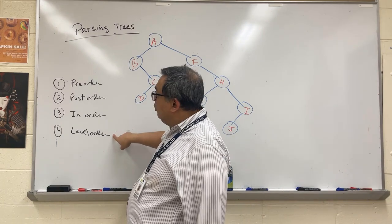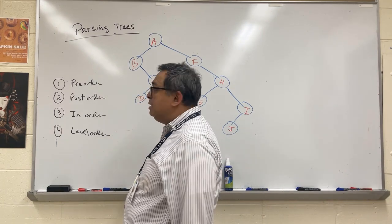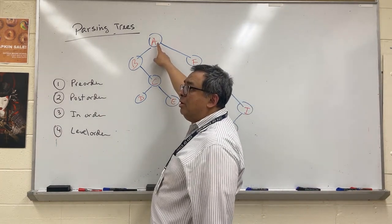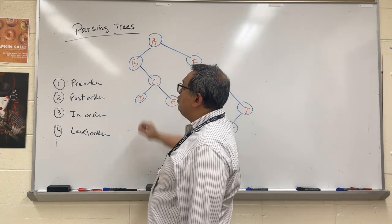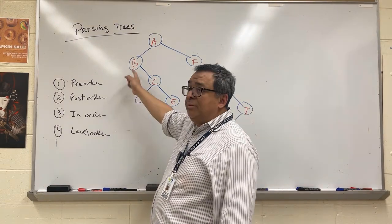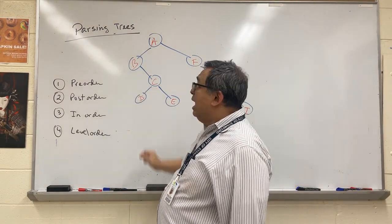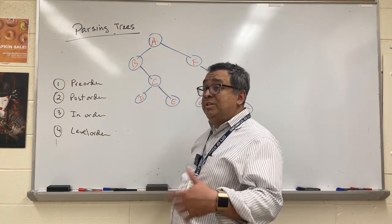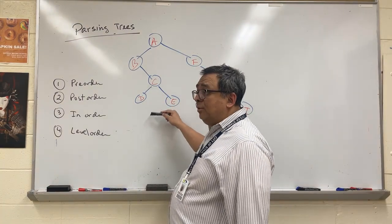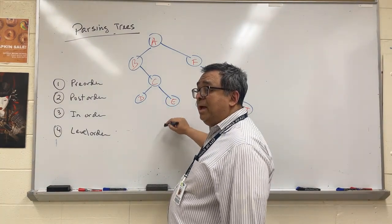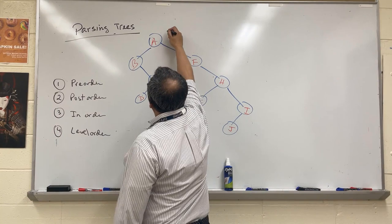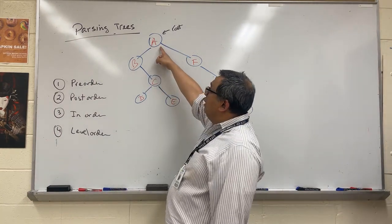We're going to look at pre-order first. To do pre-order, we start at the root — we always start at the root — and we try to go as far left as possible. If we can't go left because there's no node there, then we go to the right. Each time we come upon a new node, we visit it, or in this case, print it.